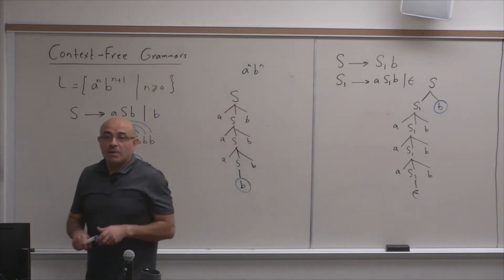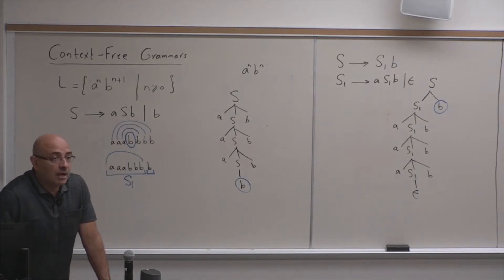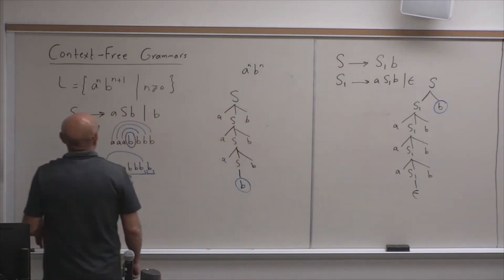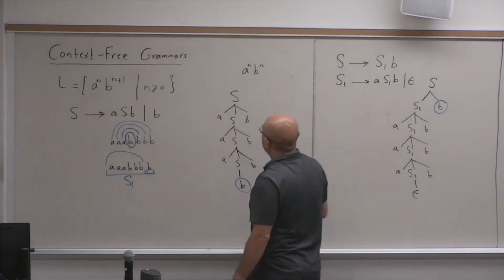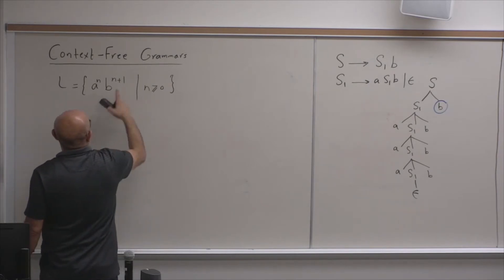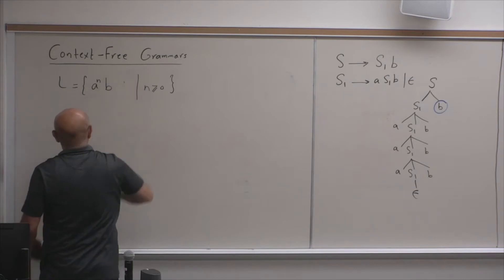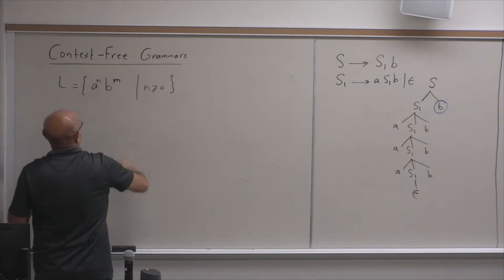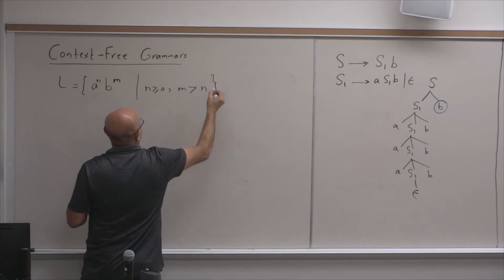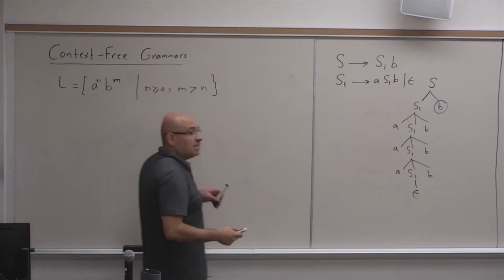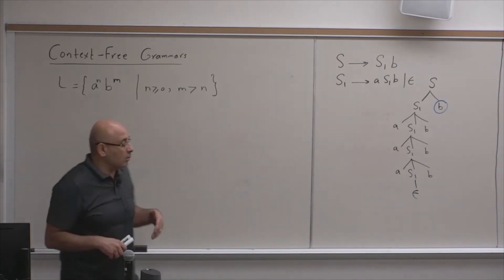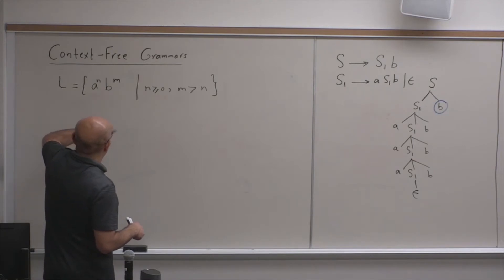So now we have seen three examples of context-free grammars. Let me further generalize this. Instead of doing a^n b^(n+1), I'm going to do a^n b^m such that n ≥ 0 and m is greater than n. So here I'm generalizing this — the additional b's can be an arbitrary number; there are one or more b's relative to a's.